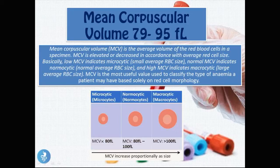Welcome back to part 2 of this presentation. Another test frequently ordered from the hematology blood test is the mean corpuscular volume, and the normal value is between 79 and 95 femtolitres. The mean corpuscular volume is the average size of the red blood cells in the specimen.